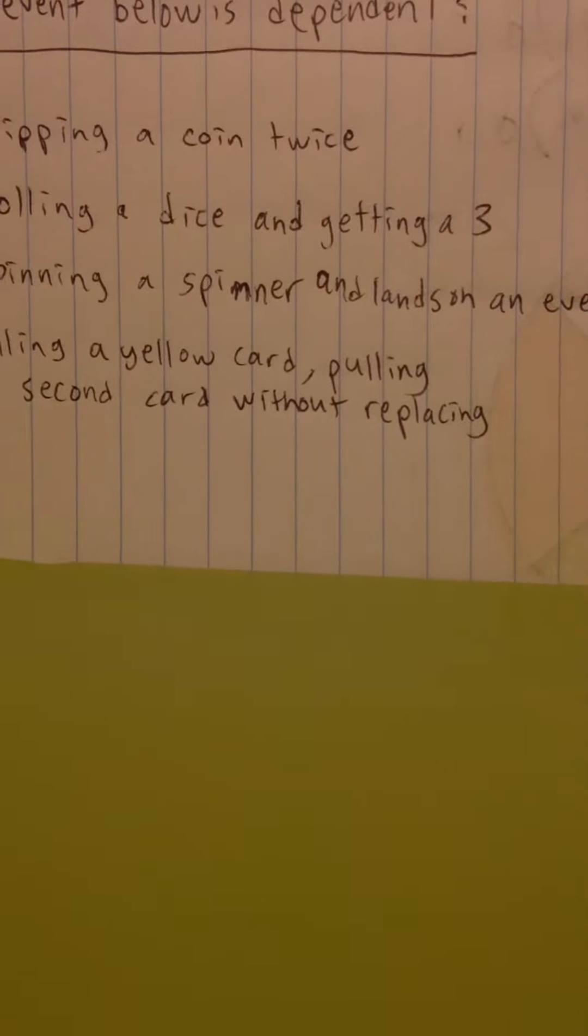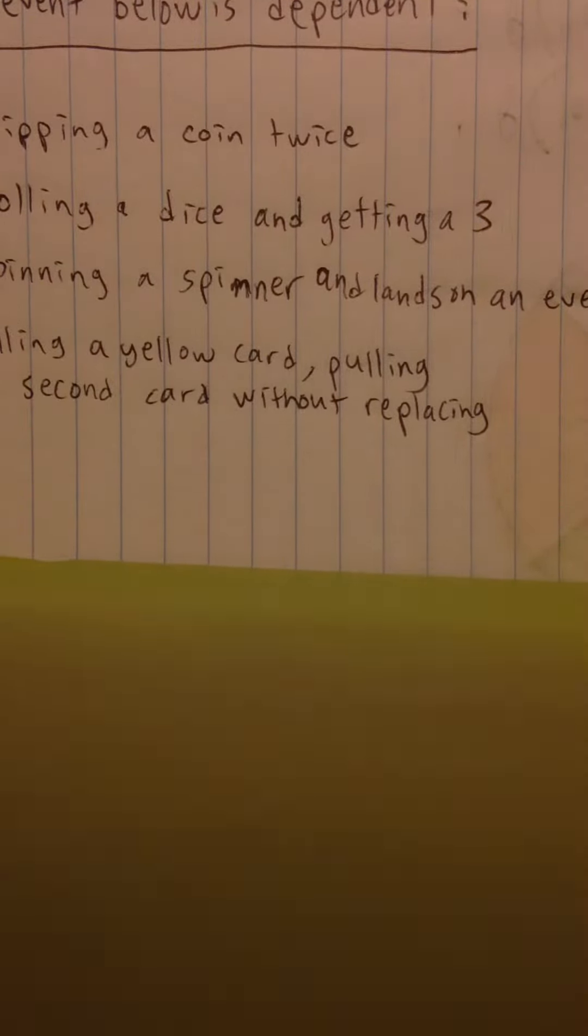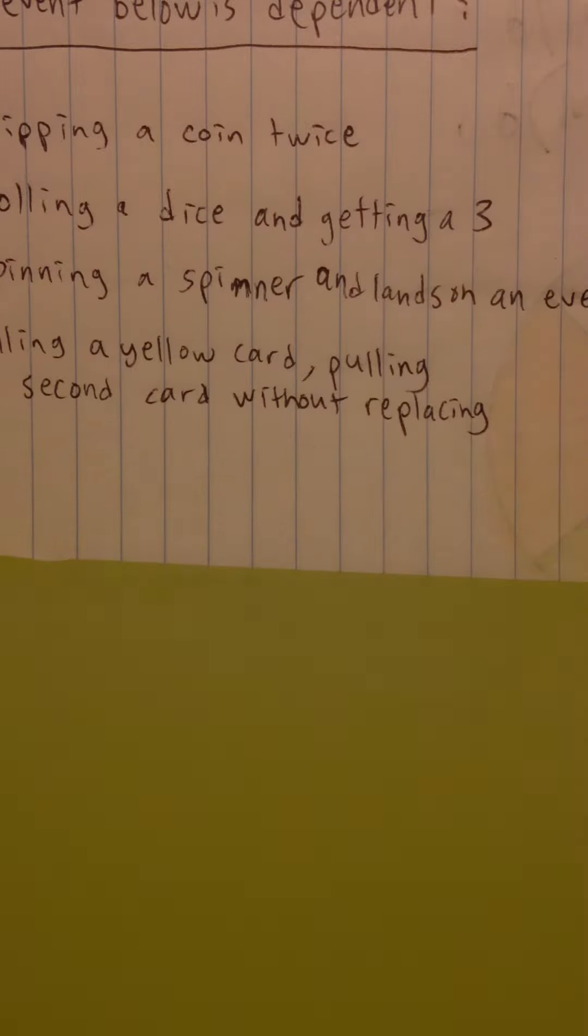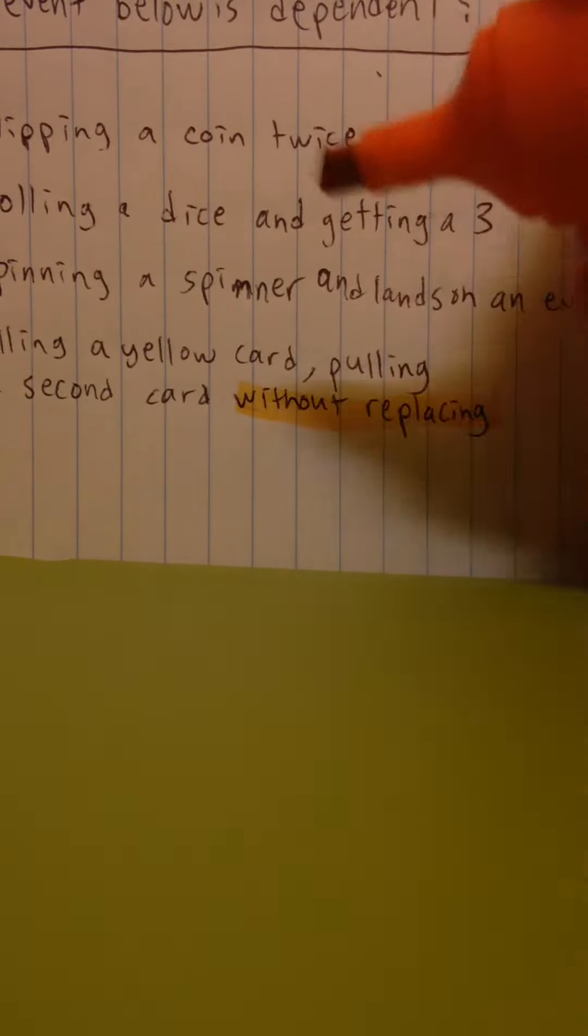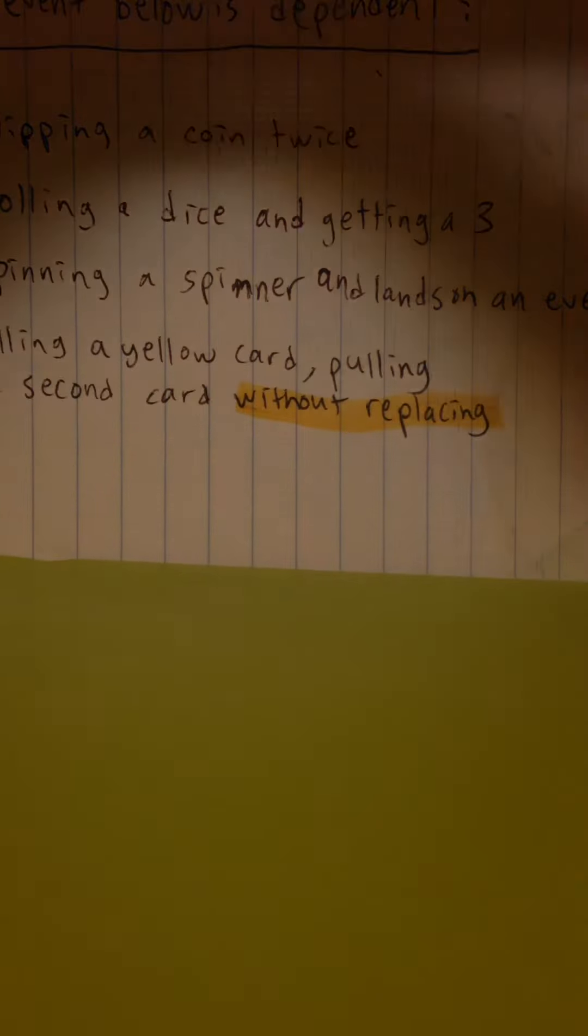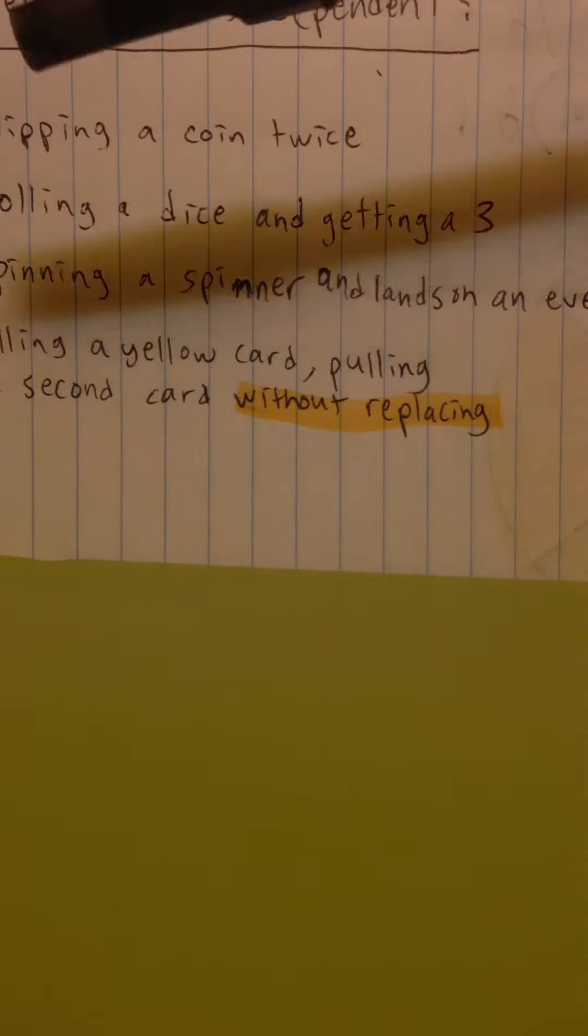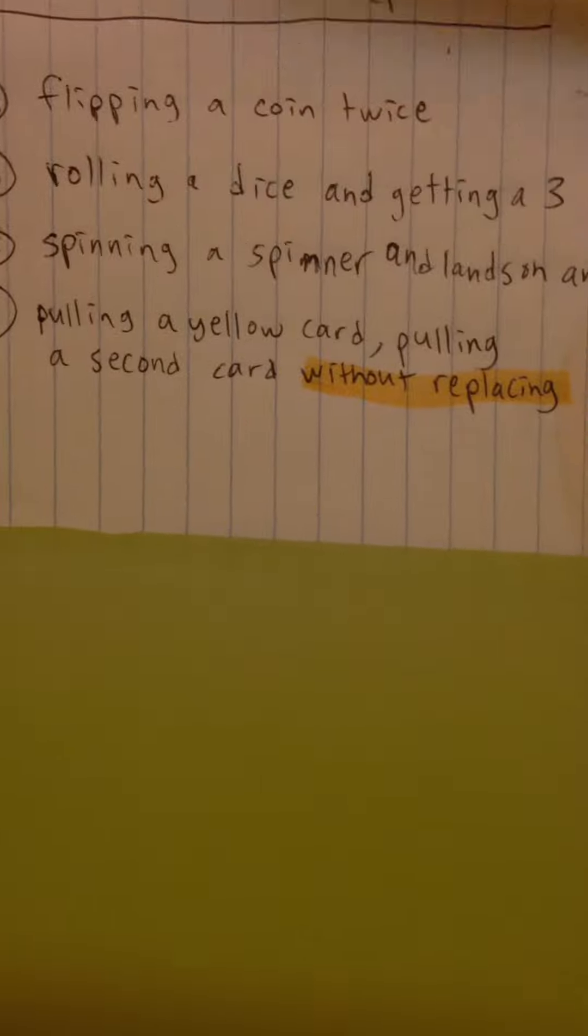Now, the key here to find out is that it says here without replacing, and that indicates that the probability depends on pulling a yellow card.